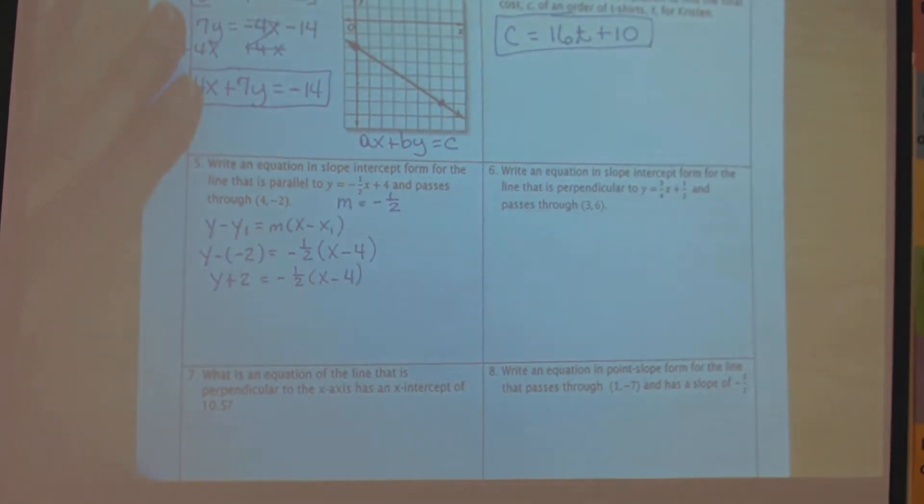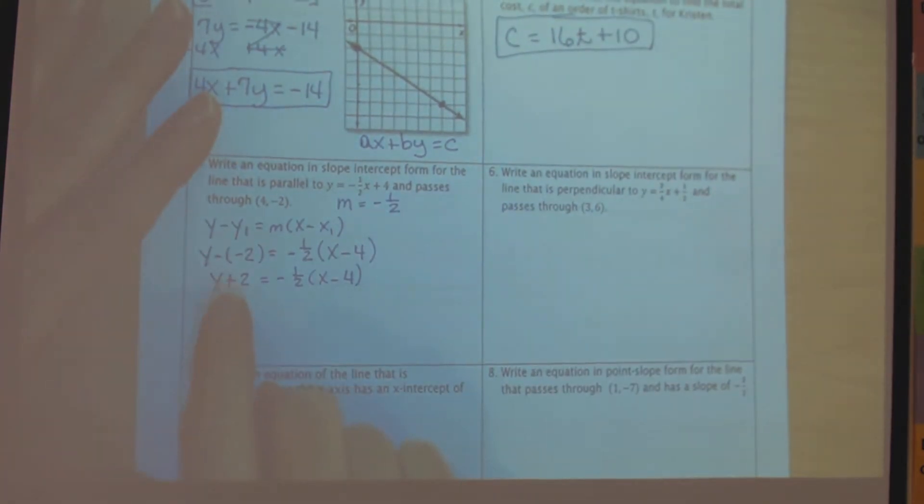Okay, now we need to solve for y. Before I can solve for y, before I can get rid of this 2 over here, I need to get rid of the distribution over here. So if I distribute this negative 1 half, I get negative 1 half times x, negative times negative is positive, and half of 4 is 2.